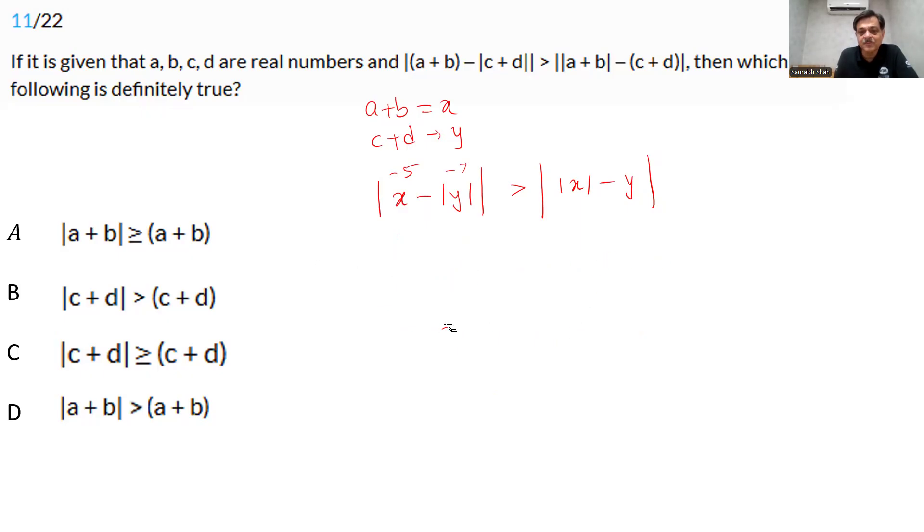So we are now left with one positive, one negative. Let's try to put x as positive and y as negative. Let's take x as simply 5 and y as minus 7. So our equation becomes modulus of 5 minus 7. Minus 7 modulus will be plus 7. So minus 7 is greater than modulus of 5 is 5 minus minus 7. This gives us 5 minus 2 modulus 2 is greater than 12. This is 12. This is wrong. So this is also wrong.